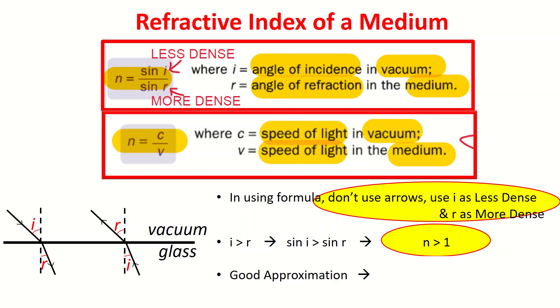The third point is always a good approximation. Because on earth it's pretty difficult to get vacuum, so most of the time vacuum is a good approximation to air when it comes to refractive index calculations.